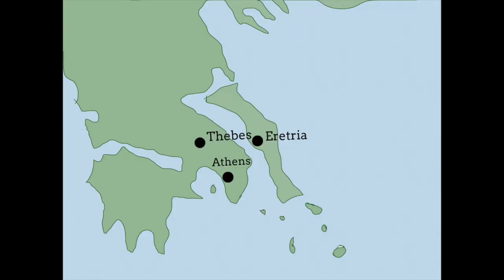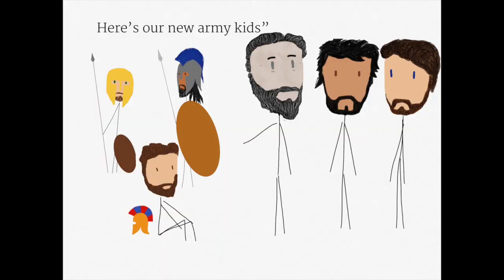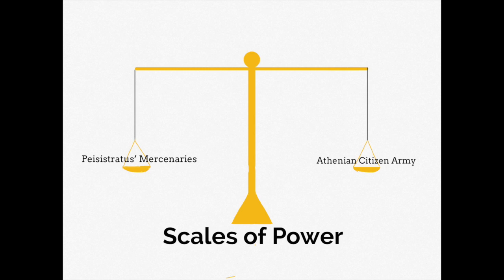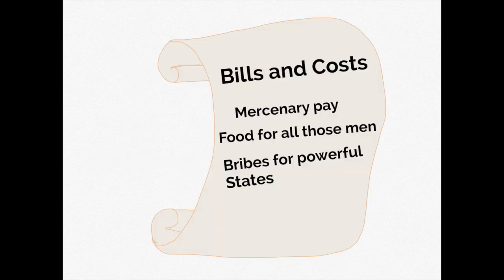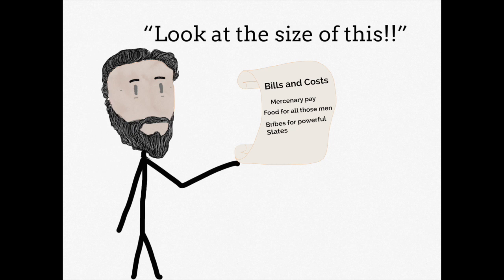The city of Thebes was amongst the most generous, providing an immense amount of financial support. Pisistratus took this money and used it to buy mercenaries from Argos. So things were looking better, but his small force was still not enough to guarantee a decisive victory, and the longer they delayed, the more the campaign was costing.